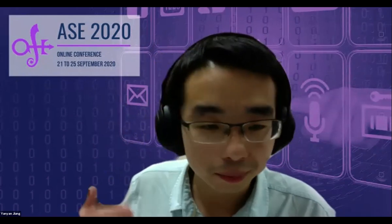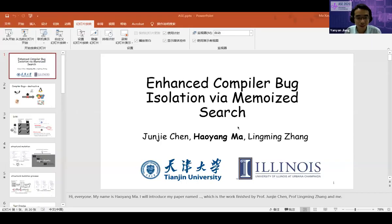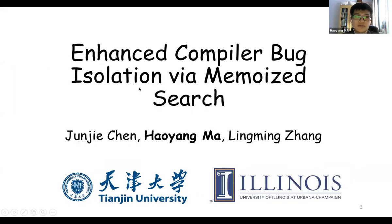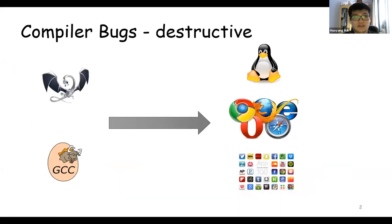Hi everyone, my name is Haoyang Ma. I'm going to talk about my paper titled Enhanced Compiler Bug Isolation via Memoized Search. This work was finished by Professor Junjie Chen, me, and Professor Lingming Zhang. I'll first go with compiler bugs and their destructive effects.